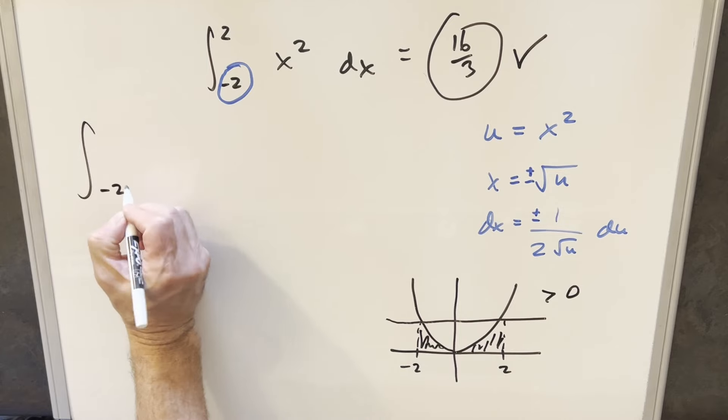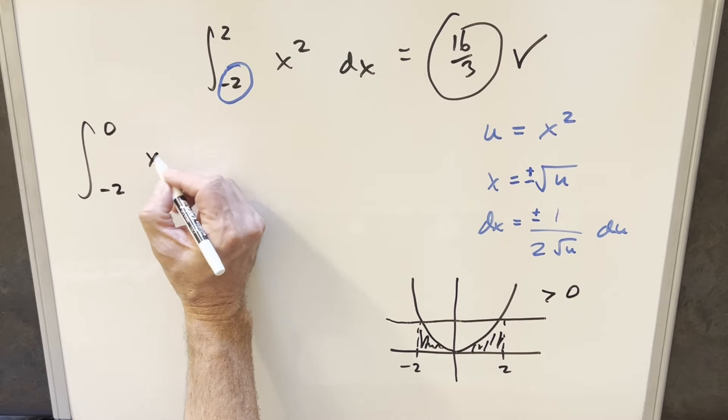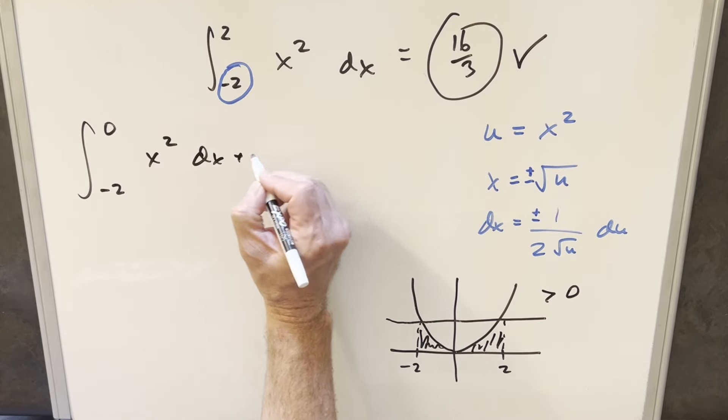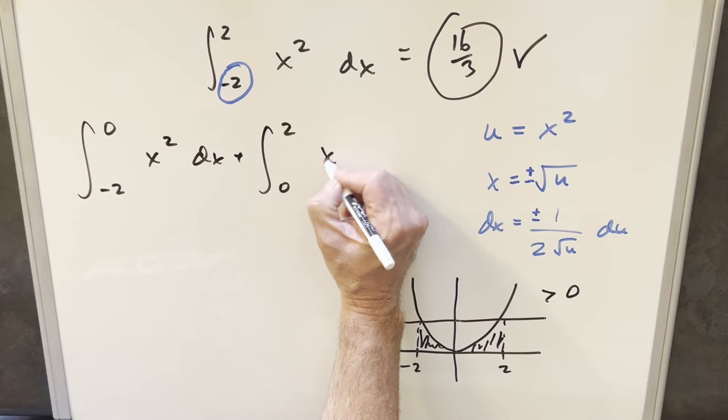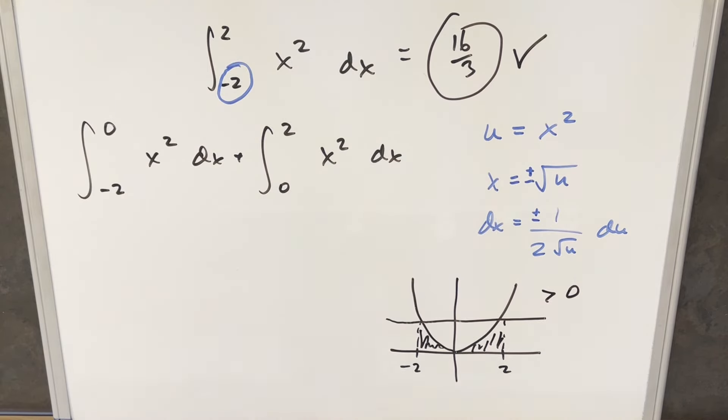So to do this, we'll just go first from minus two to zero of x squared. And then for the next one, we'll go from zero to two x squared. And then we'll go ahead with this same substitution. Now when you plug in minus two, this is still going to be four, this will be zero, we end up with u. Now for this, we want the minus case here and here. So this is going to be minus. Here, I'll put the minus right there for the moment. And we'll have this one over two square root u du.